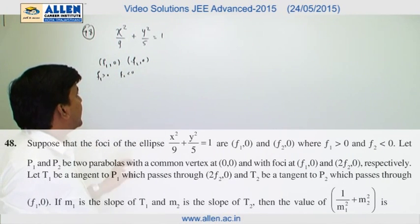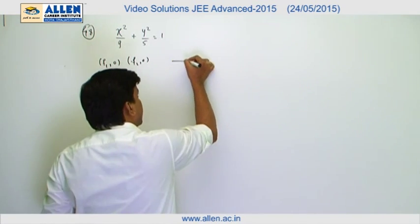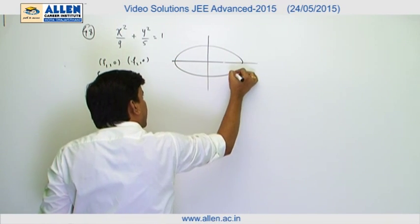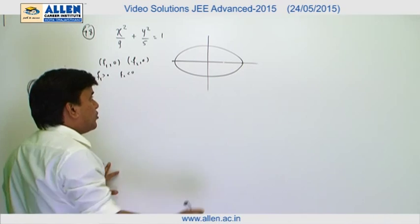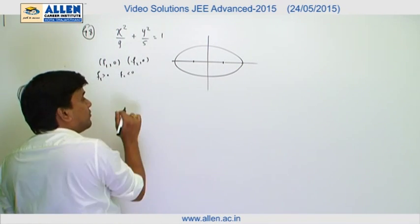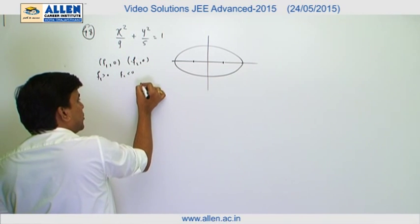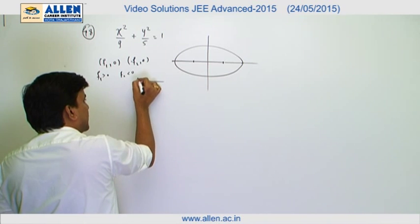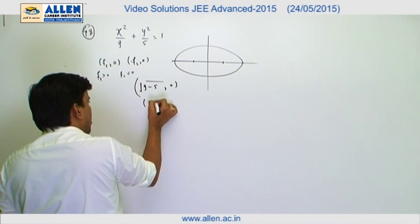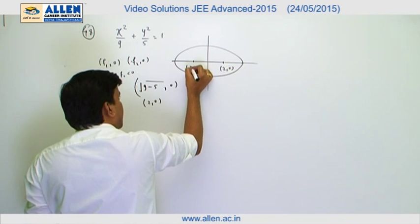In question number 48, there is an ellipse given: x² / 9 + y² / 5 = 1. The ellipse has foci f1 and f2. To calculate their coordinates, we use √(a² - b²) = √(9 - 5) = 2, so f1 is (2, 0) and f2 is (-2, 0).